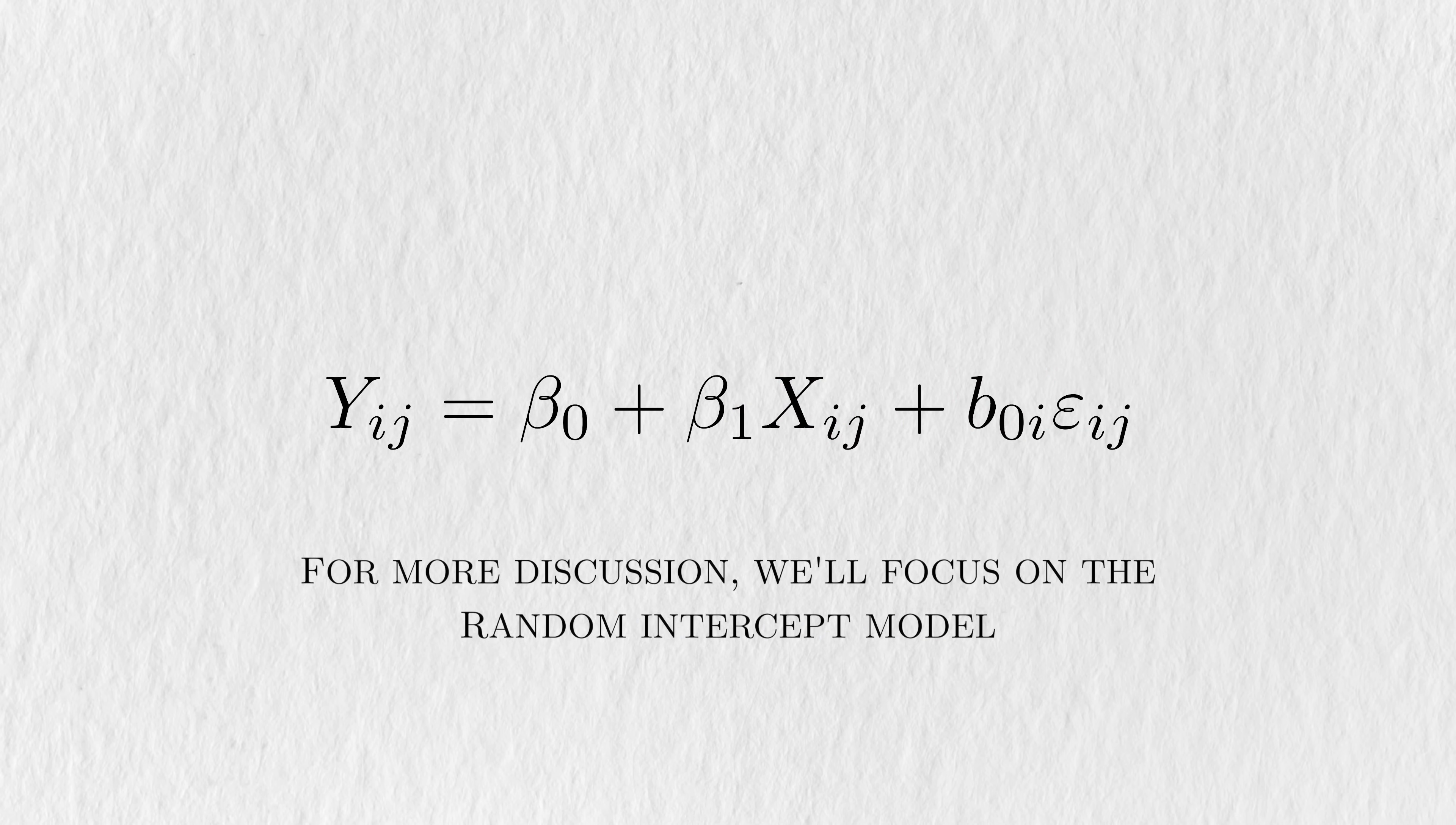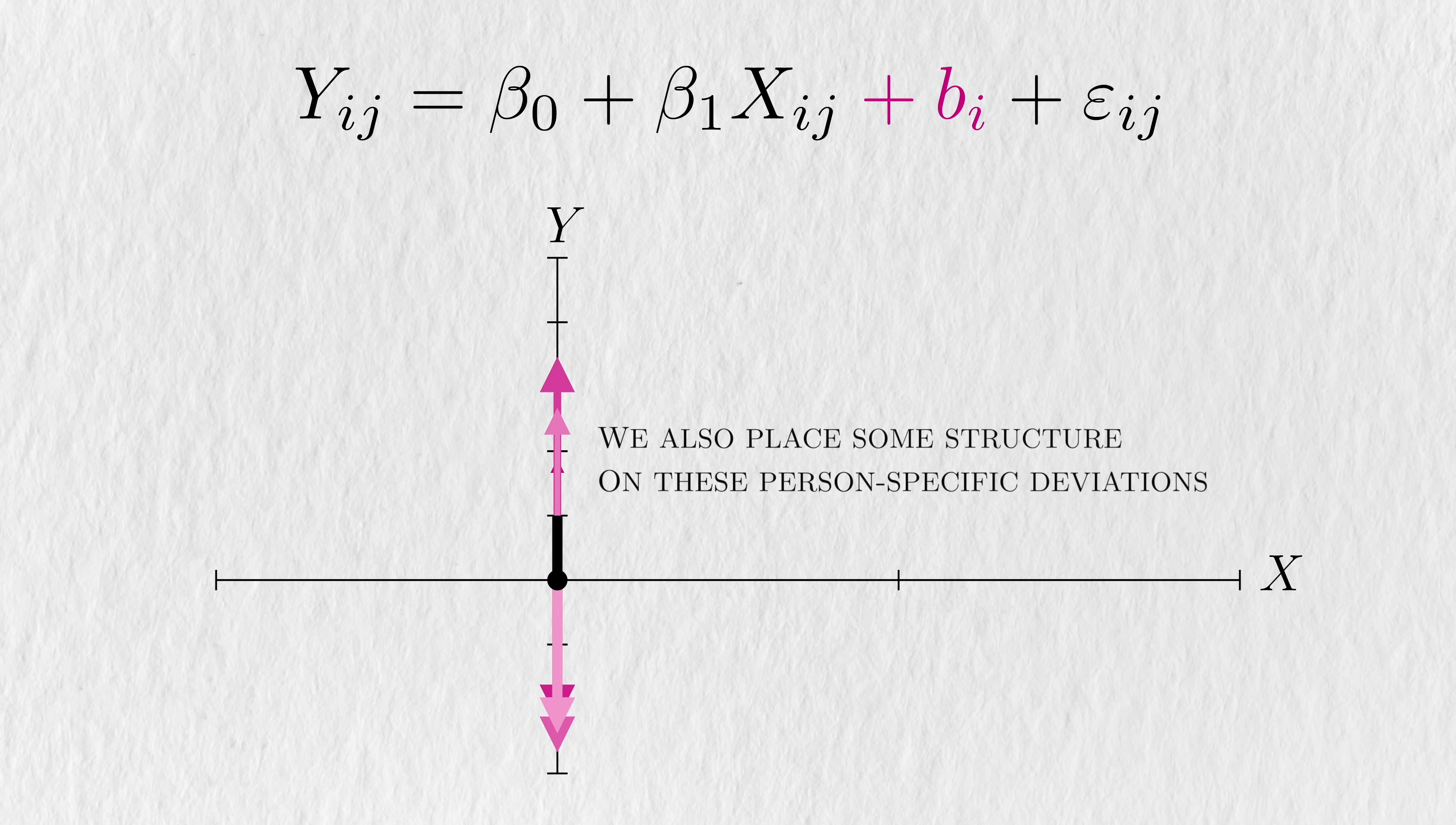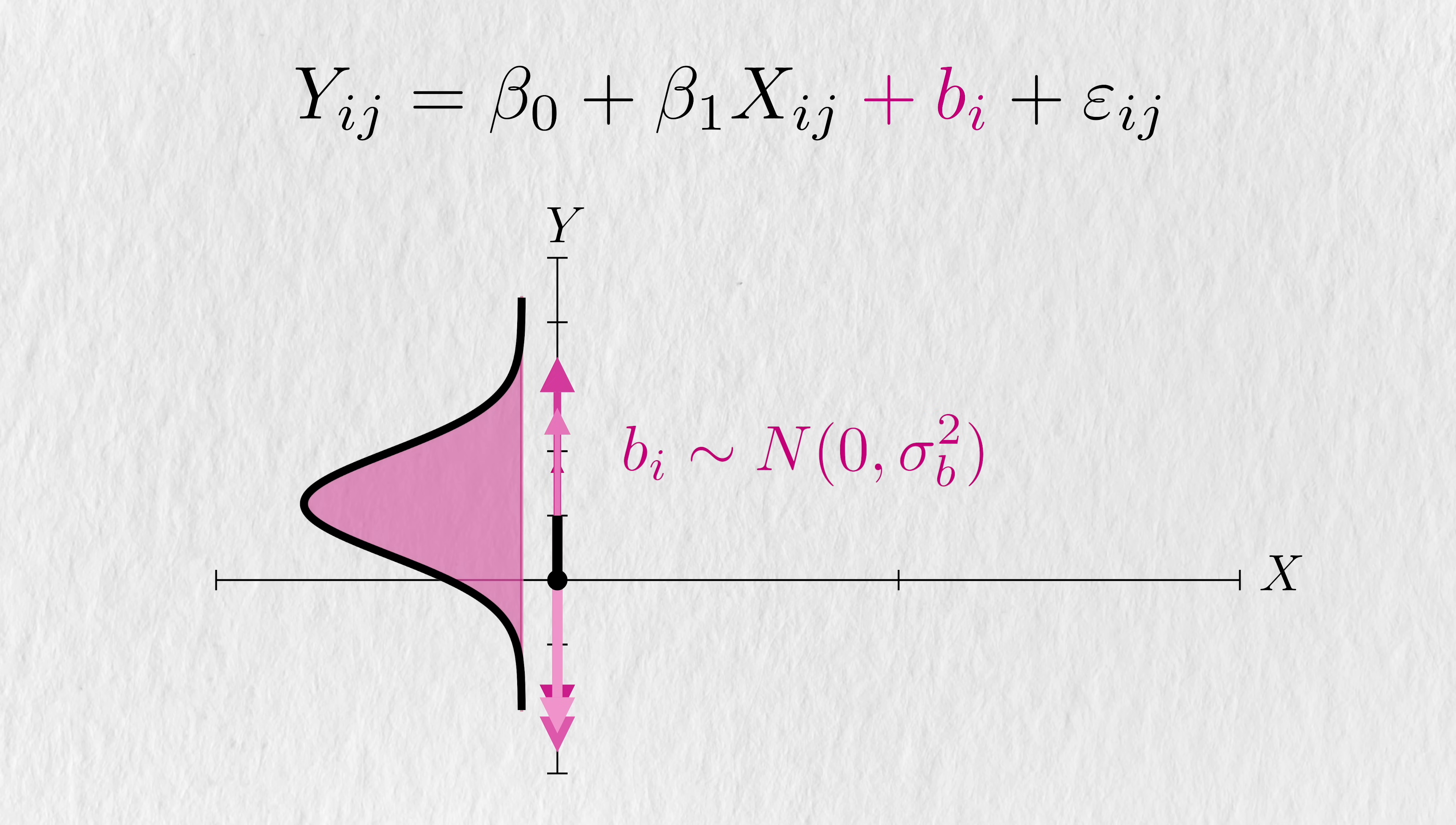For simplicity, we'll use the random intercept model as a point for more discussion. In the random intercept model, we allow each person to have a slightly different mean outcome if they had been on placebo. We also place some structure on all of these person-specific deviations. These deviations are assumed to come from a normal distribution. The deviations have an average of 0, which means they're not systematically higher or lower than beta0. And they have their own specific variance, which I'll label Sigma2b.